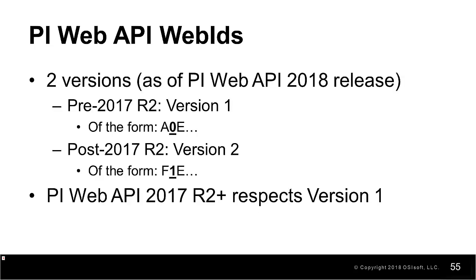There are two versions of PI Web API Web IDs, and the two versions are easily distinguished between. Version 1 has the second character of the web ID as a 0, and version 2 has the second character of the web ID as a 1. Version 2 web IDs are the default ones returned by PI Web API version 2017 R2 and later, while version 1 is returned in all versions prior to 2017 R2.